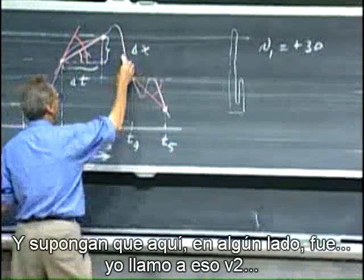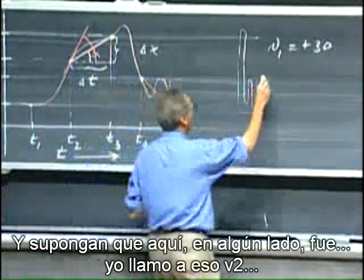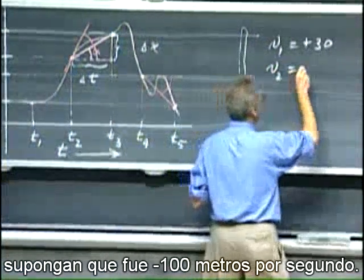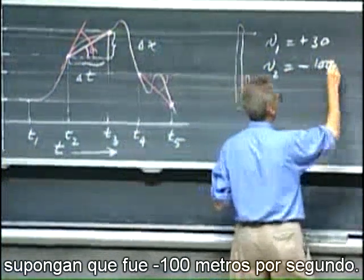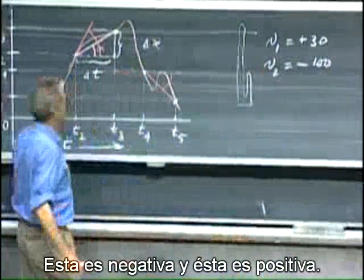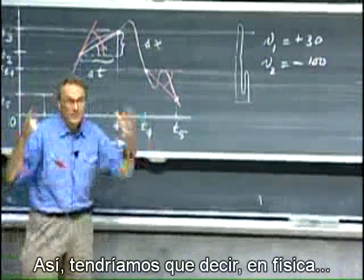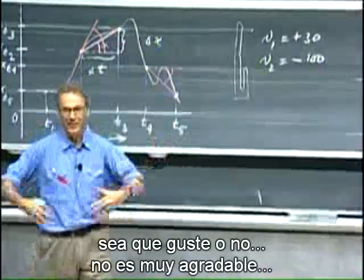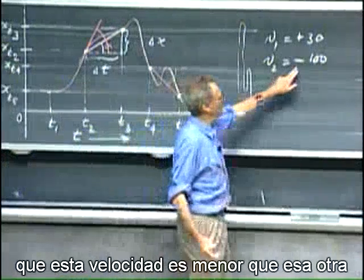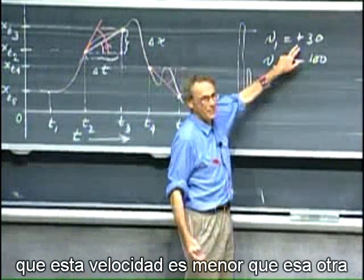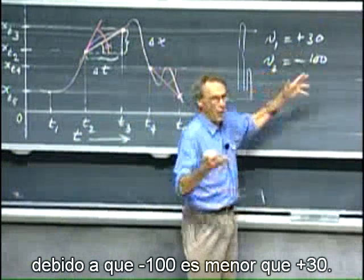And suppose here somewhere it was, I call that v2, suppose that was minus 100 meters per second. This is negative and this is positive. Then we would have to say in physics, whether you like it or not, it's not very pleasing, but you would have to say that this velocity is lower than that one because minus 100 is lower than plus 30.